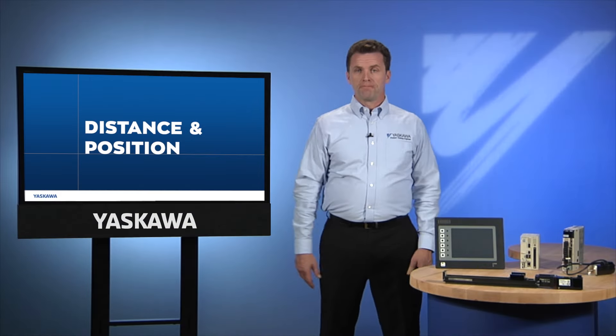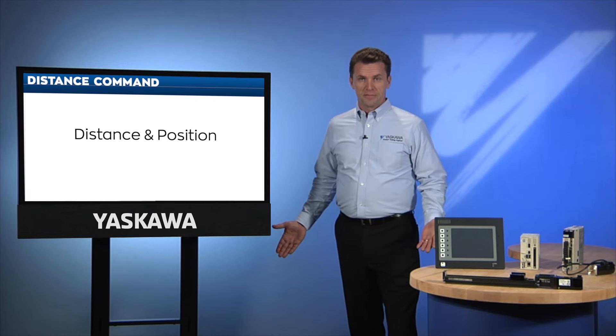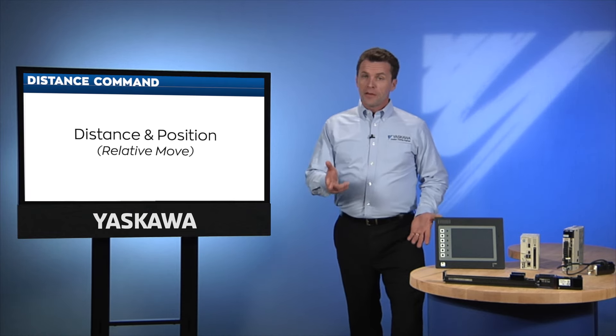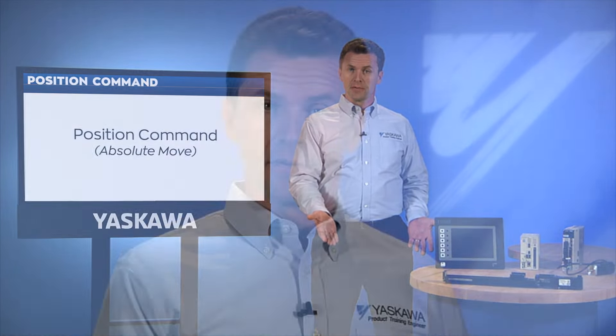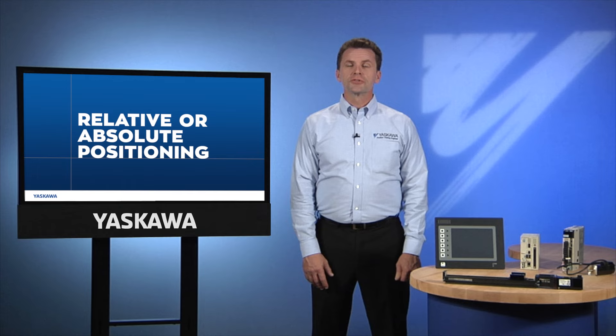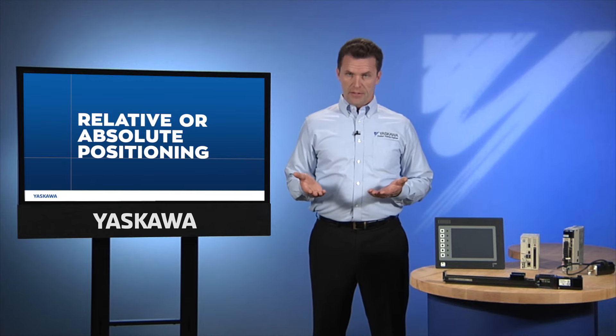Here's an example. If you order me to take three steps forward, that's a distance command — a relative move. If you tell me to go to the table, that's a position command — an absolute move. It's the same result, I'm at the table, but the type of command is different. Modern industrial motion controllers allow the programmer to define the move either relatively or absolutely, whichever makes the most sense for that particular part of the control program. For this reason, we really can't tell which method was used by simply looking at the machine in motion.